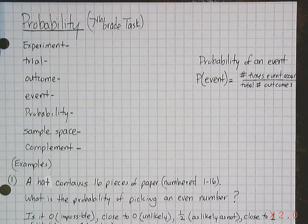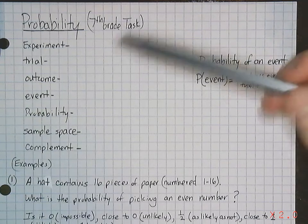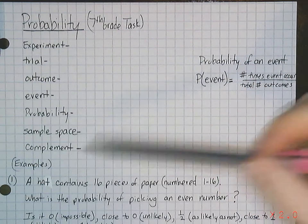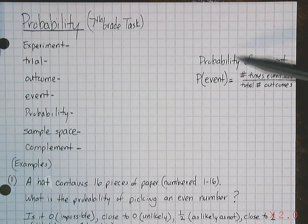We're going to take a look at these words here: experiment, trial, outcome, event, probability, sample space, complement. We're going to talk about probability of an event, how to calculate that.